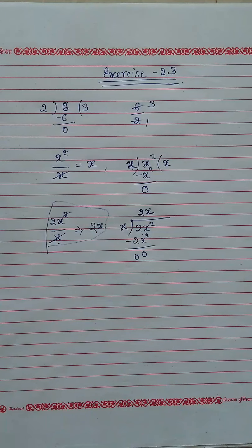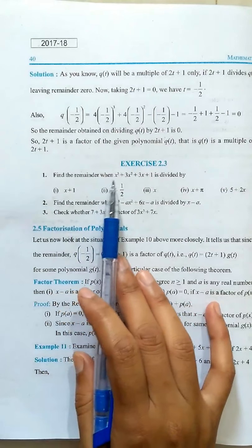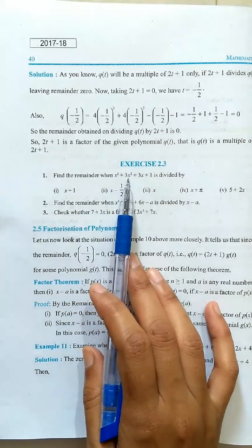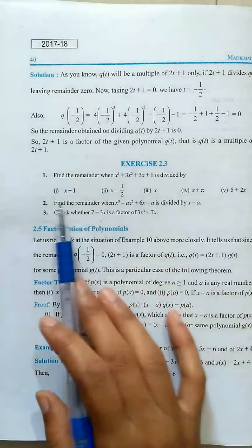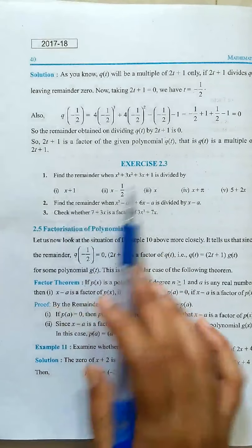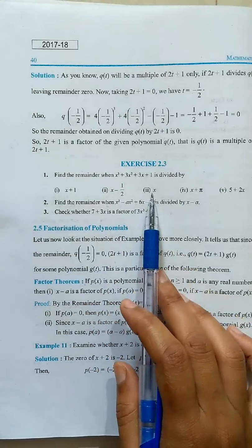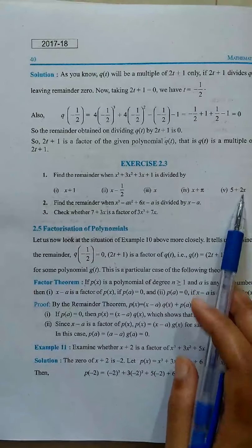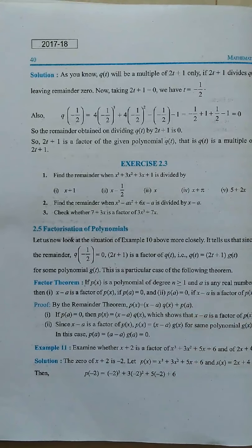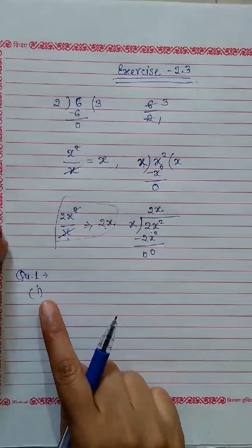In the same way, we solve exercise 2.3. Now our first question is: find the remainder when x cubed plus 3x squared plus 3x plus 1 is divided by x plus 1. Again, divided by x minus 1 upon 2. Again, divided by x. And also x plus pi, and 5 plus 2x.